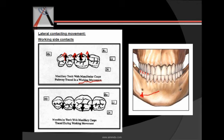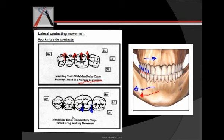On the working side, if pencils were fixed to the maxillary teeth, since the mandible moves laterally and the maxilla relatively moves in the opposite direction, these pencils would create lingually directed arrows on the mandibular teeth, depicting the path of the maxilla on the mandibular teeth.